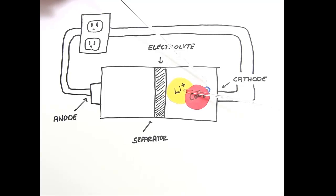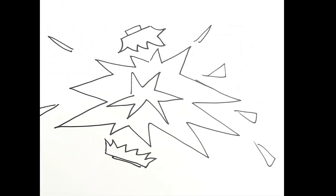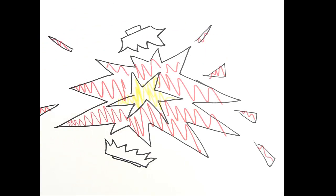Now, this separator is crucial because it keeps the two metal electrodes from directly touching each other. Because if it did, the flow of electrons would happen way too fast, and you can end up with something like this. Boom goes the dynamite.